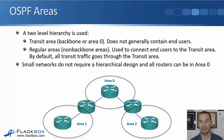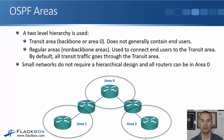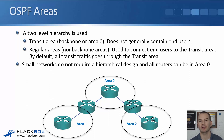In the example diagram, we've got area zero, and area one and area two hanging off of it. Any traffic between areas other than area zero always has to go through area zero. We can't have traffic going directly between area one and area two.